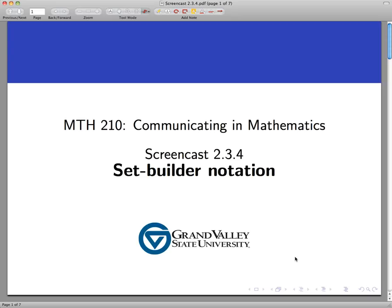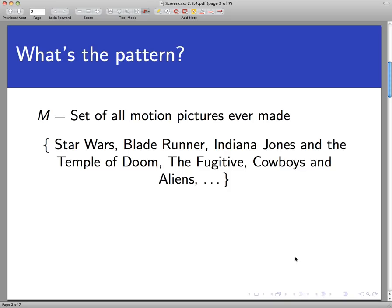Welcome to the screencast on Set Builder Notation. Let's have a look at a set that's a little different than one you've seen before. We're going to look at the set M of all motion pictures ever made and focus on this subset of M. Here's a subset of the set of all motion pictures ever made and we're going to list this in roster notation.